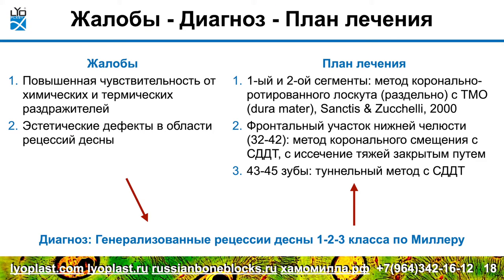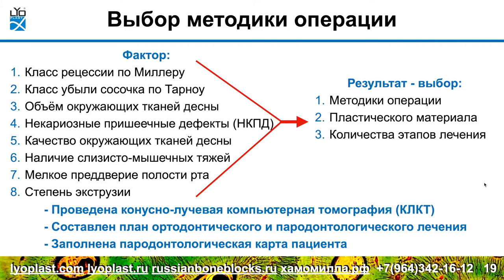Пример такого плана: мы учитываем жалобы, с чего и начинаем. После клинического осмотра и всех необходимых диагностических мероприятий составляется диагноз и выбирается план лечения. Бывают разные сегменты, оперируемые разными методами. Фронтальный участок нижней челюсти оперировали другим методом — тоннельным методом с трансплантатом. Некая декомпозиция плана и выбор отдельных методик для разных групп зубов, исходя из показателей рецессии, однозначно говорит об эффективности всех из них.